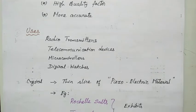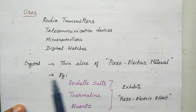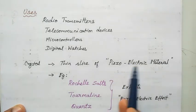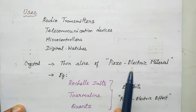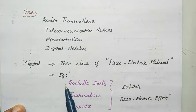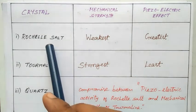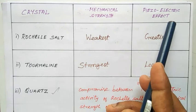Next we see what is a crystal and what types of materials are used as crystals. A crystal is nothing but a thin slice of piezoelectric material. The main property required for oscillations is called the piezoelectric effect — this material should exhibit the piezoelectric effect. The examples are Rochelle salts, Tourmaline, and Quartz. These three types of materials are called crystals and are compared with respect to mechanical strength and piezoelectric effect.